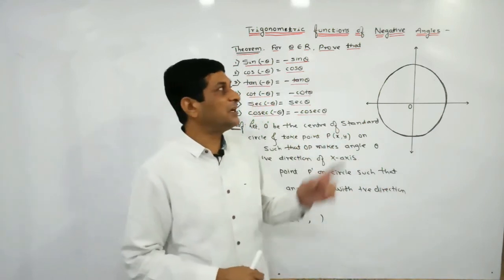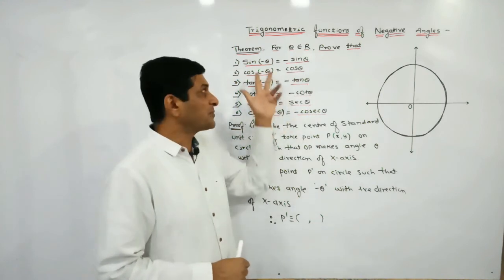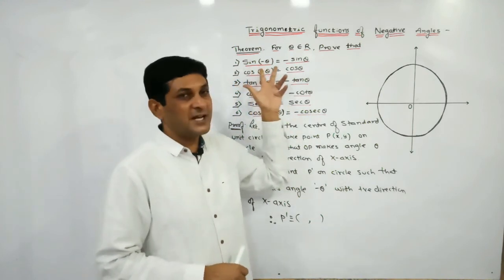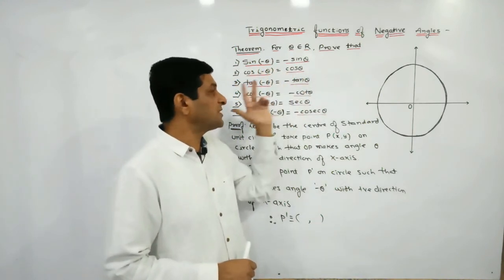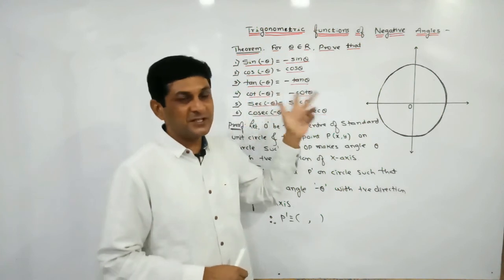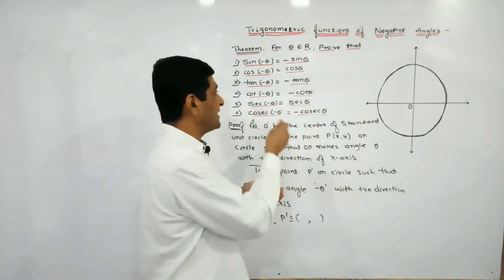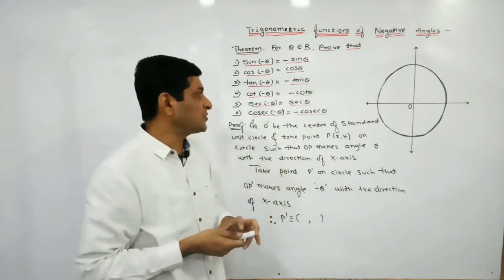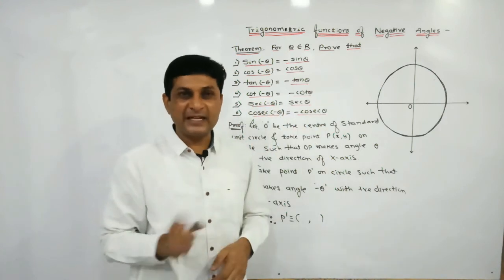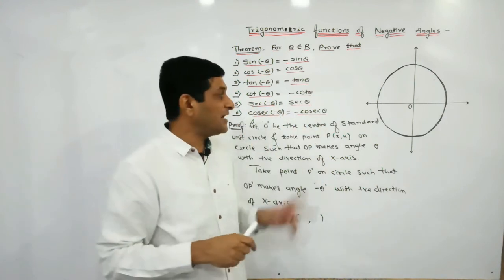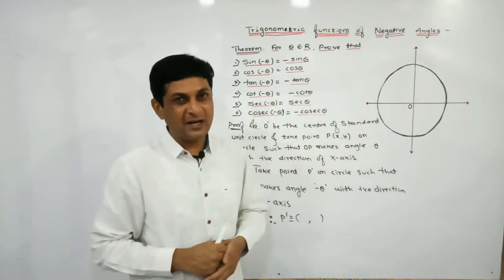If theta belongs to R, then we have to prove: sin(-θ) = -sin θ, cos(-θ) = cos θ, tan(-θ) = -tan θ, cot(-θ) = -cot θ, sec(-θ) = sec θ, and cosec(-θ) = -cosec θ.